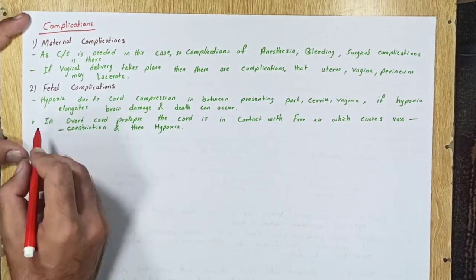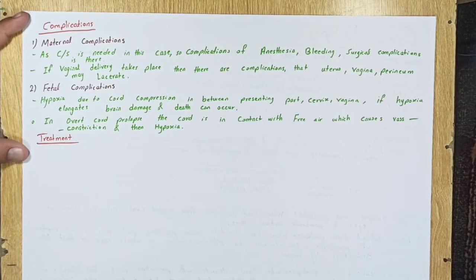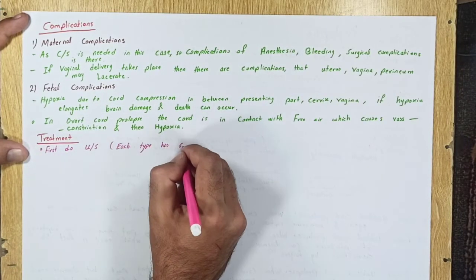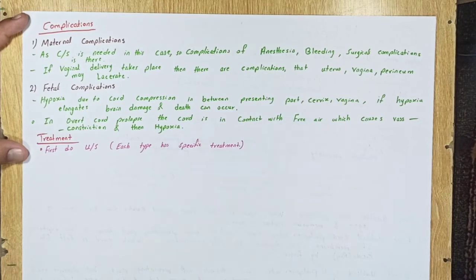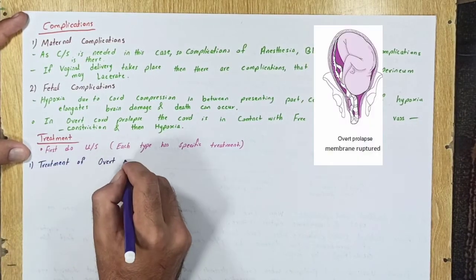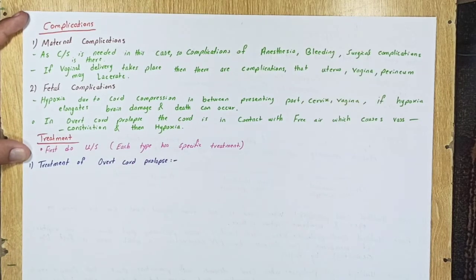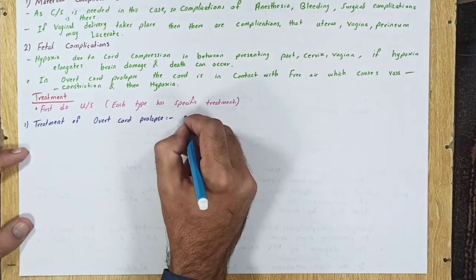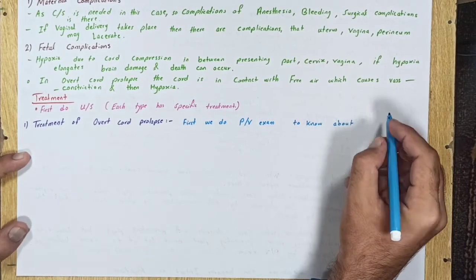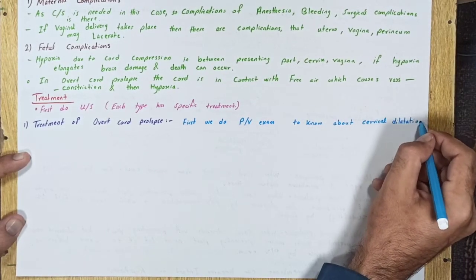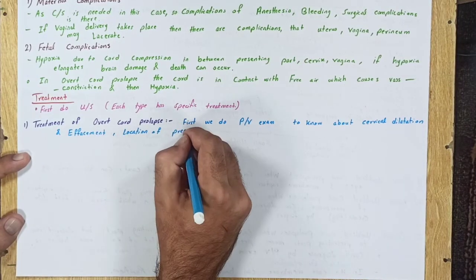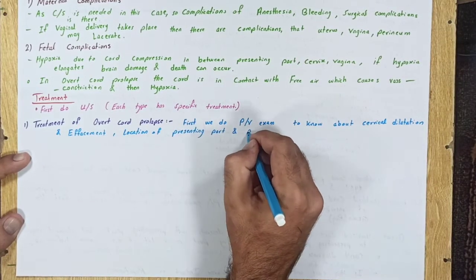Treatment: First, we do ultrasonography. Each type has specific treatment. Treatment of overt cord prolapse: First, we do pervaginal exam to know about cervical dilatation and effacement, location of presenting part, and pulse rate of cord.